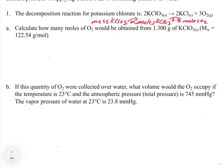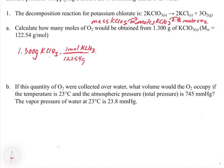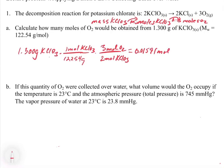The second part will use those moles of O₂ for gas law calculations involving collecting a gas over water. Taking our 1.300 grams of KClO₃ and dividing by the molecular weight of 122.54 grams per mole of KClO₃, then applying the mole ratio from the balanced reaction — for every two moles of KClO₃ there are three moles of O₂ — we calculate 0.01591 moles of O₂. That takes care of the first part.